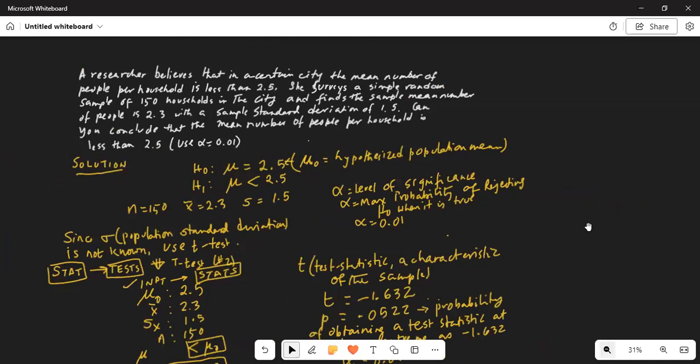The information we are given is n equal to 150, sample mean is 2.3, sample standard deviation is 1.5. Further, we have been given a level of significance which is a maximum probability of rejecting h0 when it is true. That is, we should not have rejected h0, but we are rejecting it. So, we are making a type 1 error. Alpha is given as 0.01.